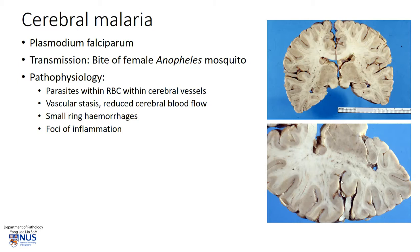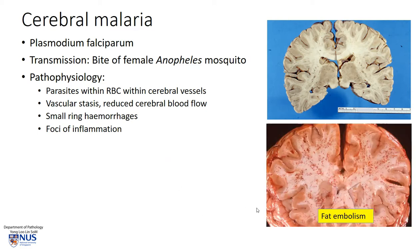Here they can reduce cerebral blood flow, and they can give rise to very small hemorrhages, as well as small foci of inflammation. This is actually an example of a different condition, which is fat embolism, which in the brain looks very similar grossly in the form of multiple petechial hemorrhages to cerebral malaria. It is also due to pathology within the small blood vessels.